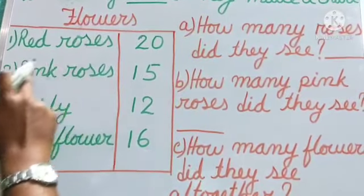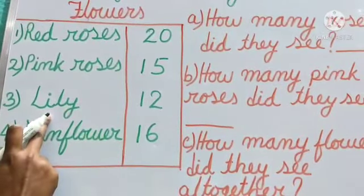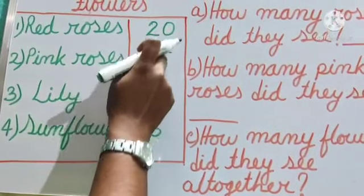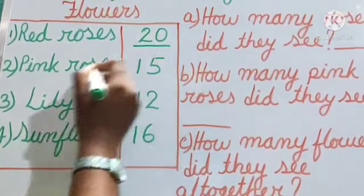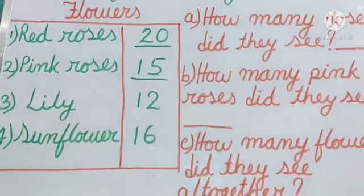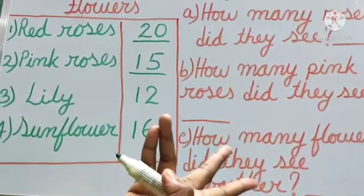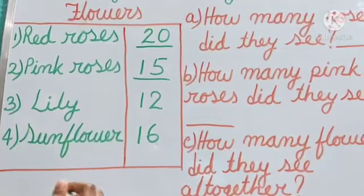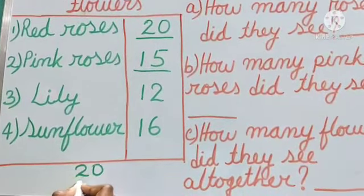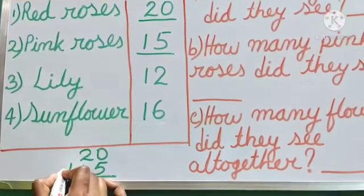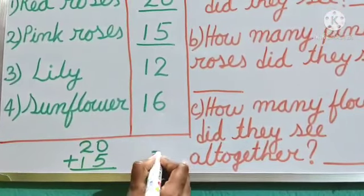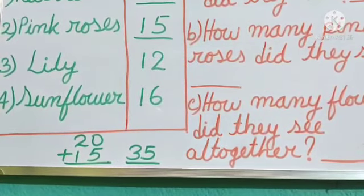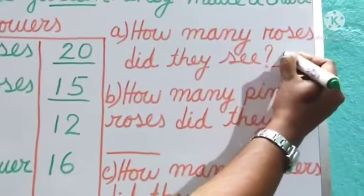Red roses and pink roses — lily no, sunflower also no. It has been asked about roses. Red roses they have seen 20, and pink roses they have seen 15. We will do the addition of red roses and pink roses: 20 plus 15. 0 plus 5 gives 5; 2 plus 1 gives 3. Total — they have seen 35 roses. So the answer is 35.